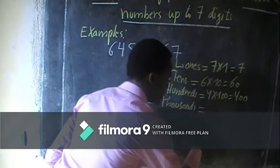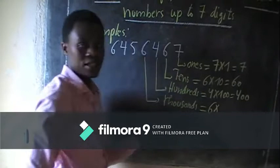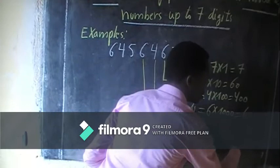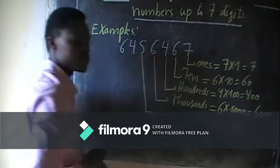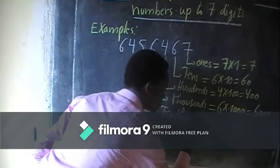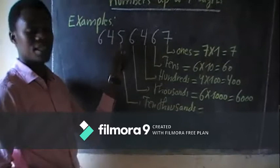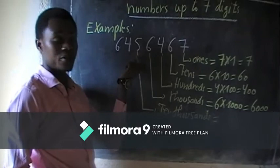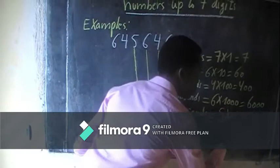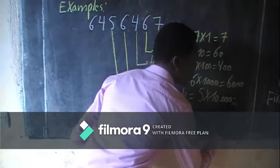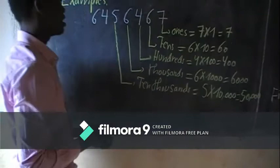Next is thousands. To find the value of this six, you take six times its place value, one thousand. Six times one thousand gives us six thousand. Next is the ten-thousands place. The place value of this five is ten thousand. To find its value, we take five times ten thousand, which gives us fifty thousand.